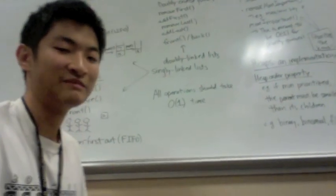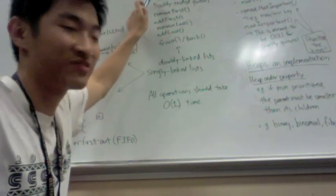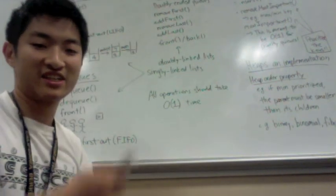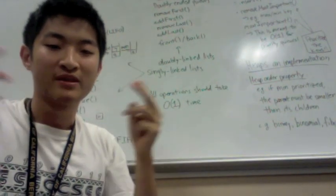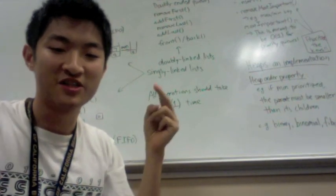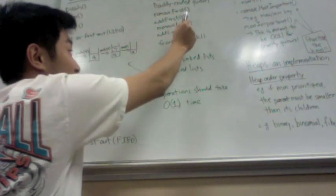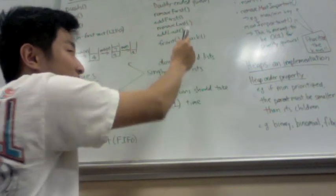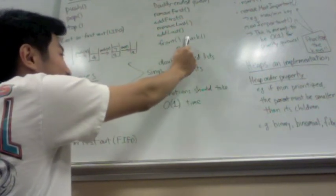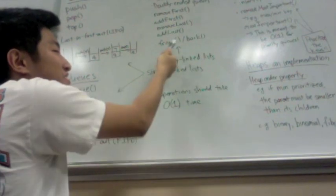And finally, doubly-ended queues, or DEQs for short, is a queue but with additions and removals being possible on both sides. So you have remove and add first from the front, remove last and add last from the back, and you can implement operations easily to check them.